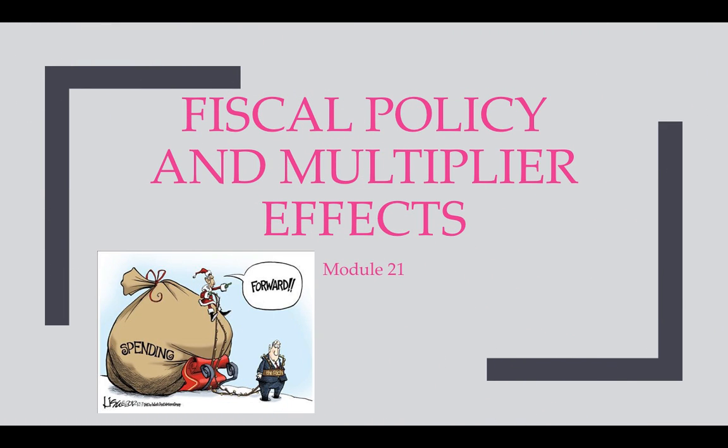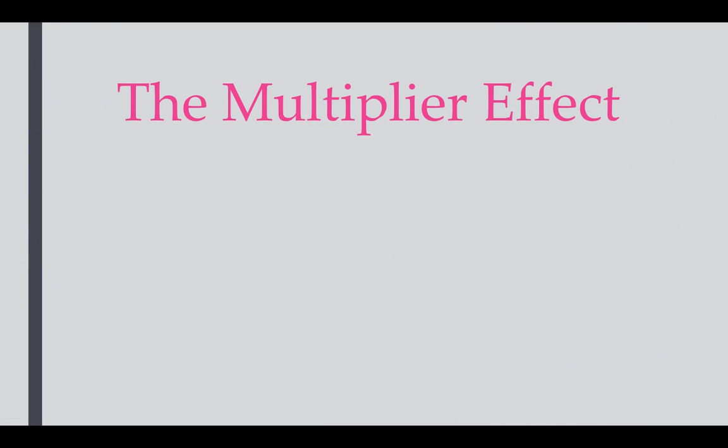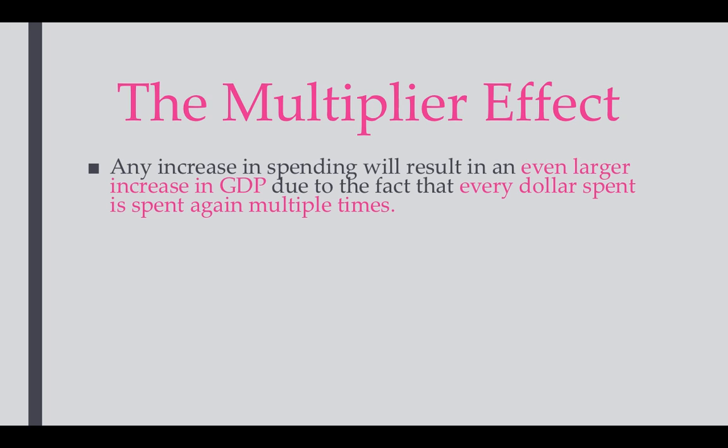Talking about the multiplier here and the multiplier effect. Basically what the multiplier effect says is that any spending that is done in the economy will be spent again multiple times, or some percentage of that dollar will be spent again multiple times. And that's kind of what we're going to work through here today.